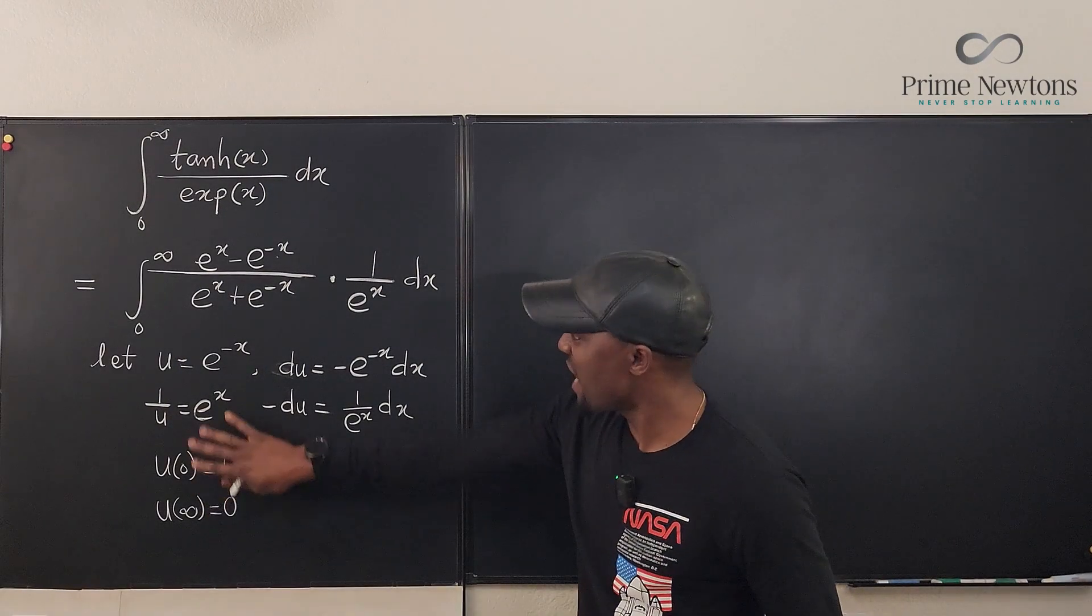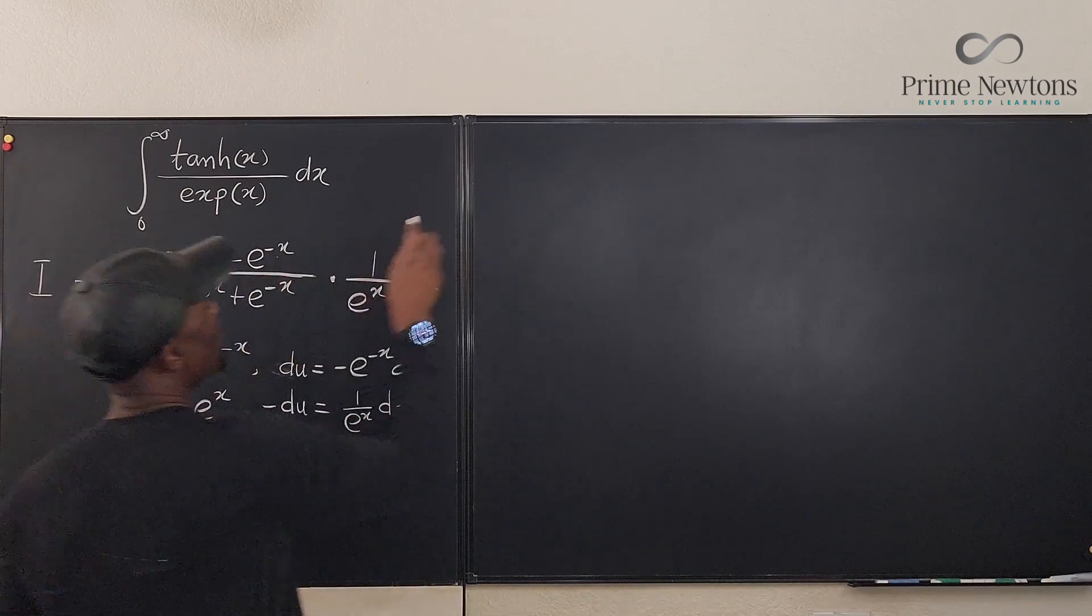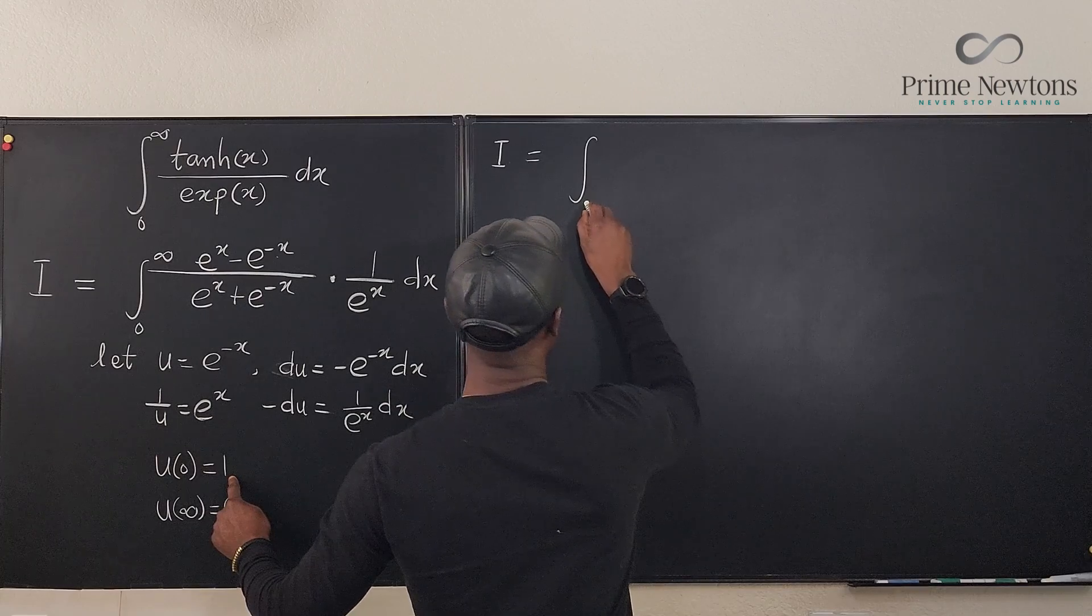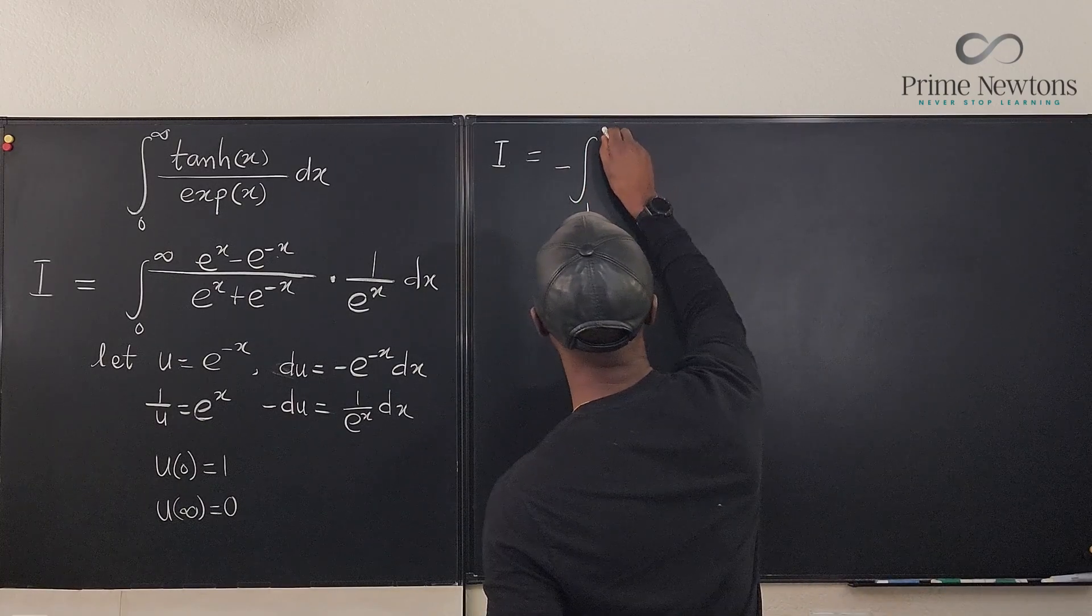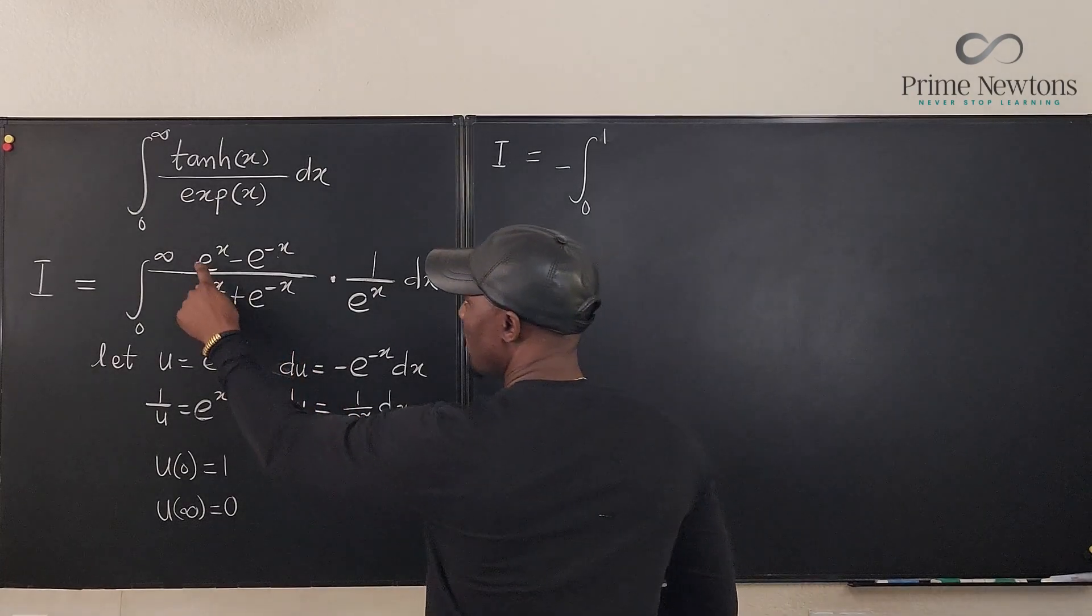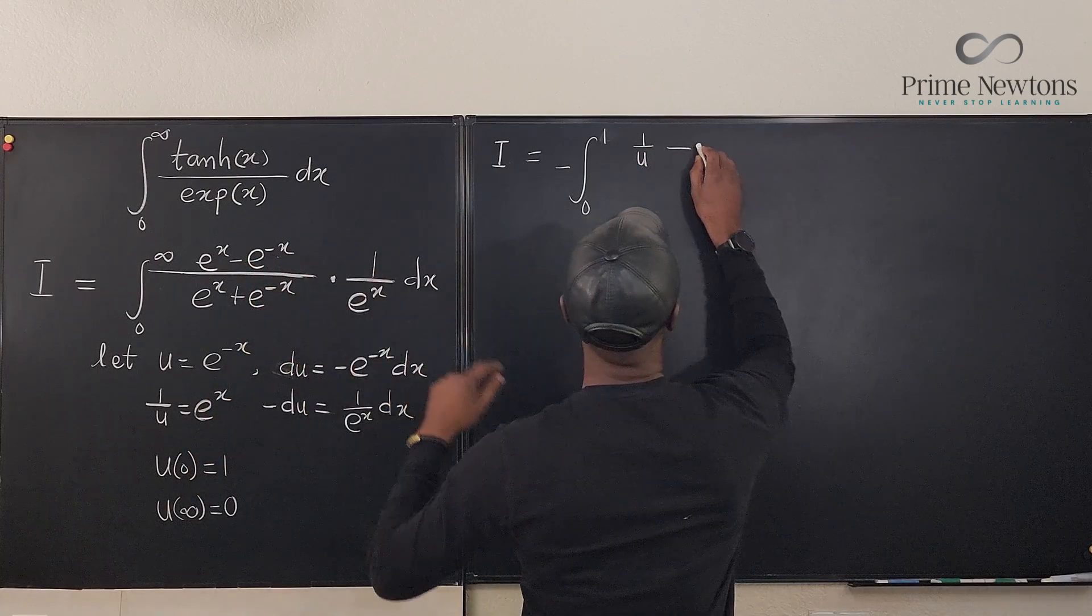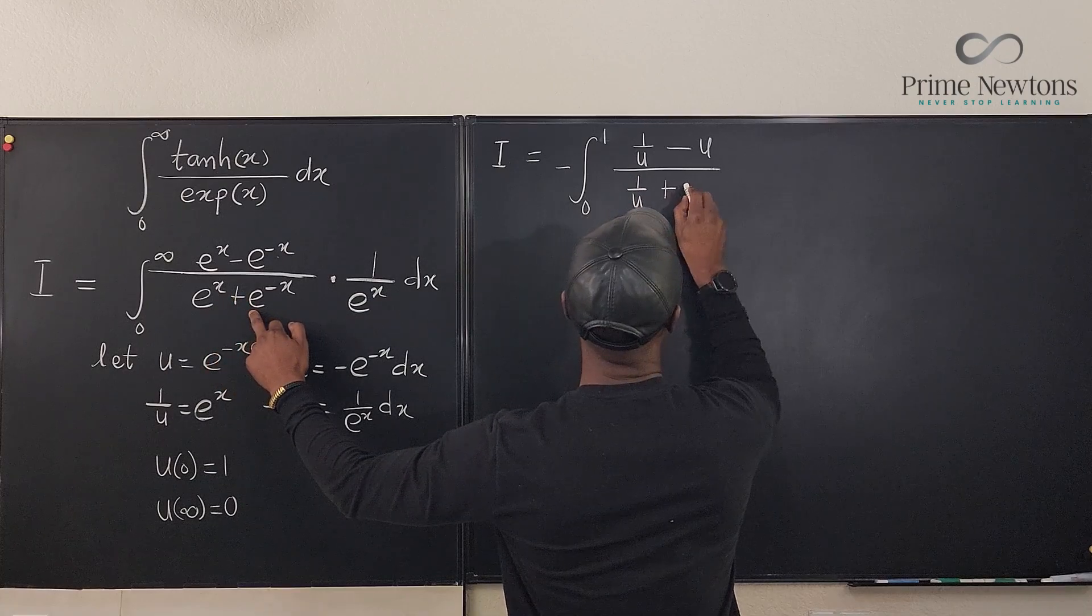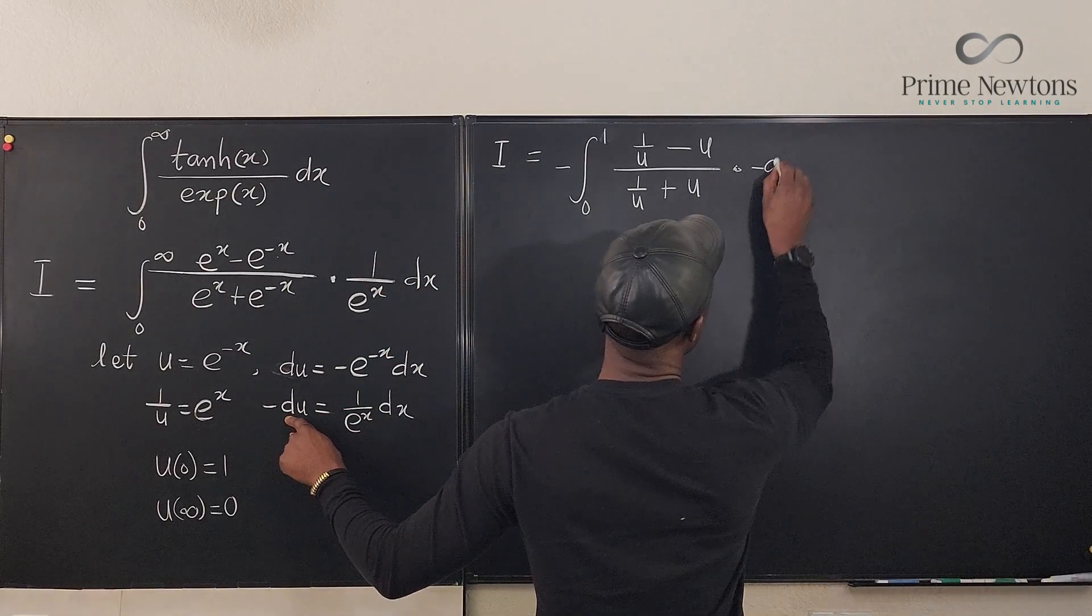So what we're going to do now is plug in everything that's essential. So we know that the integral is now equal to the integral starting from the lower boundary will become one and this would be zero. We can actually make it minus and switch this. Let's switch this one and this is zero. I don't want to go from lower to upper, so I put a minus here. And e to the x is one over u, so this is one over u minus this is u divided by the bottom is going to be one over u plus this is u. And we said that one over e to the x dx will be replaced by minus du times minus du.